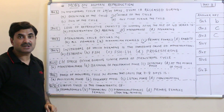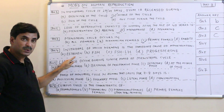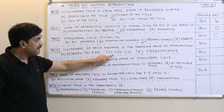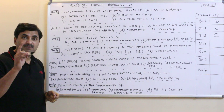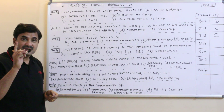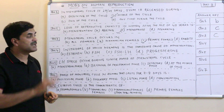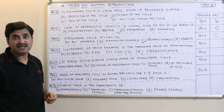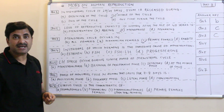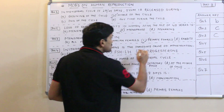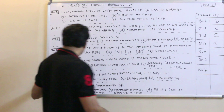Question number four: withdrawal of which hormone is the immediate cause of menstruation? The options include estrogen, FSH, LH, or progesterone. The answer is D — progesterone. If progesterone continues to be released, it will not allow menstruation. When there is a fall in progesterone, menstruation occurs. In the NCERT menstrual cycle diagram, you can see that at the end of the cycle the progesterone level falls, which leads to menstruation. Question number four answer is D.